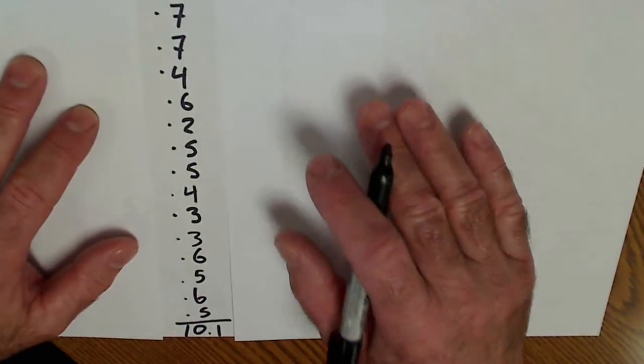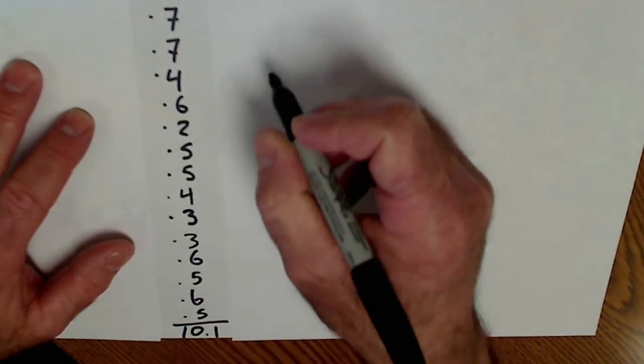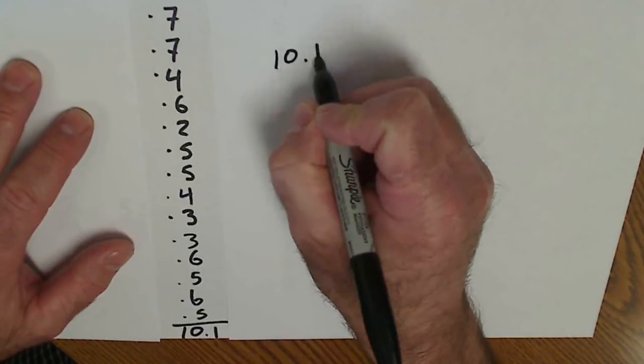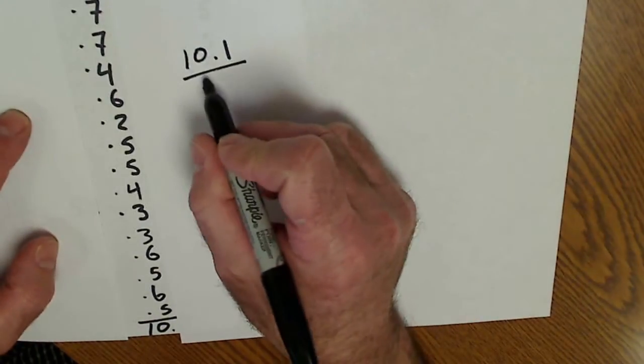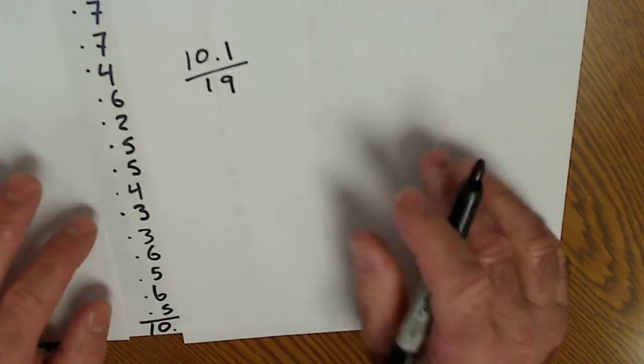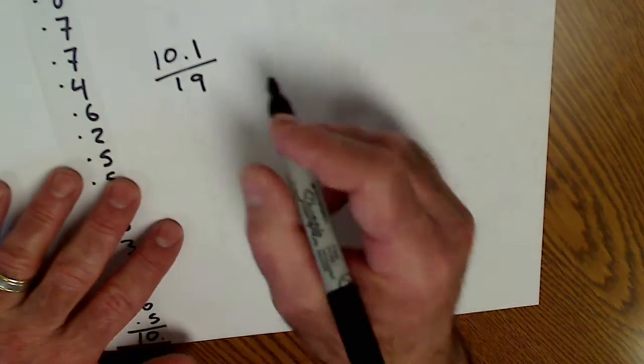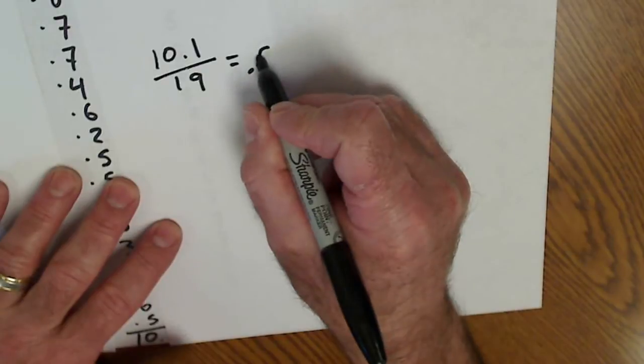I take those 19 scores, I add them all up, and it works out to be 10.1. I take that 10.1, and I divide it by the number of kids, 19, and that gives me my average score, which is 0.52.